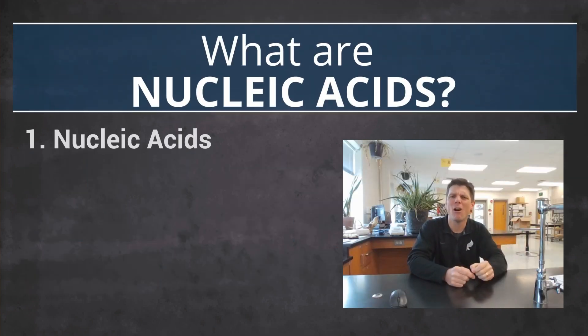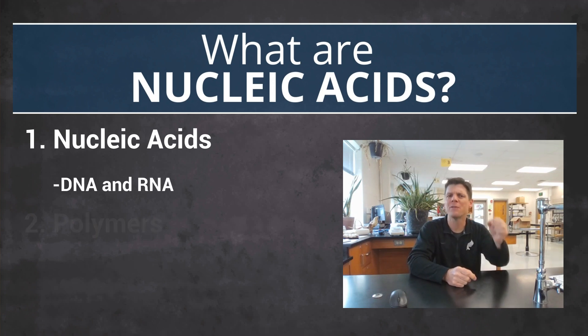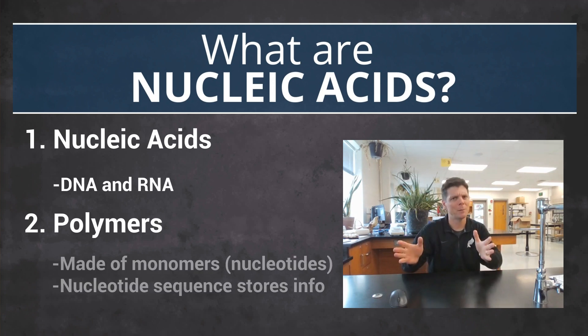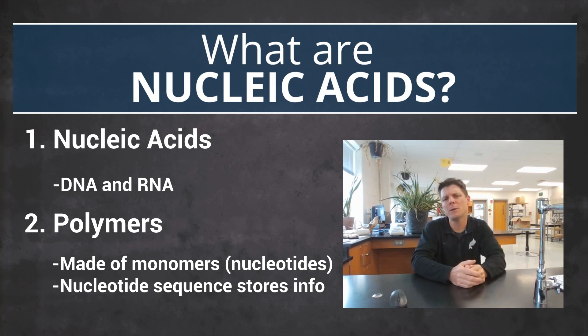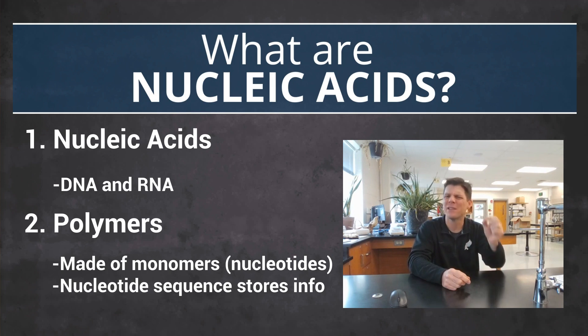So let's get started. DNA and RNA are examples of nucleic acids. They're polymers made from monomers, or building blocks, called nucleotides. Information is encoded in DNA and RNA by the sequences of their nucleotide monomers. But we should really start by talking more about the structure of these molecules.